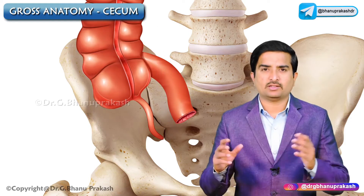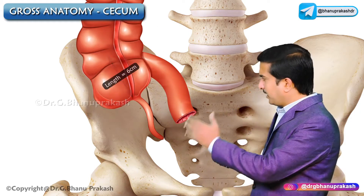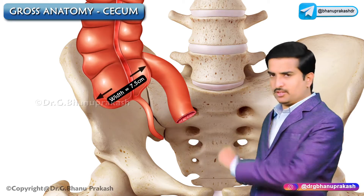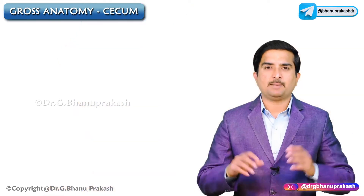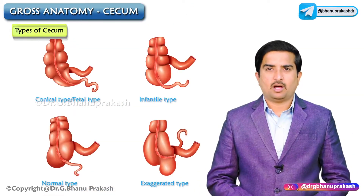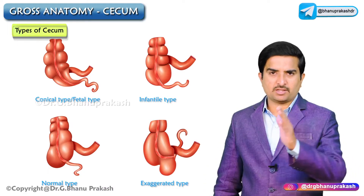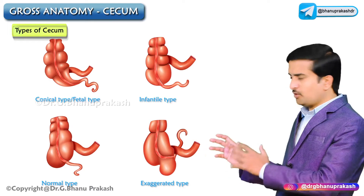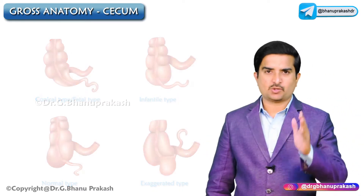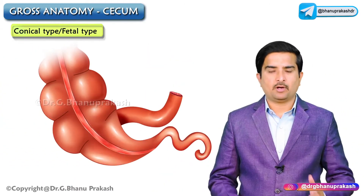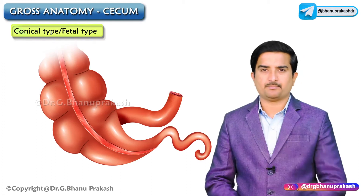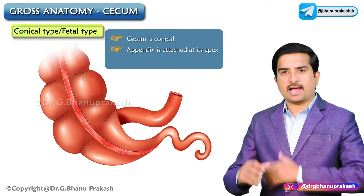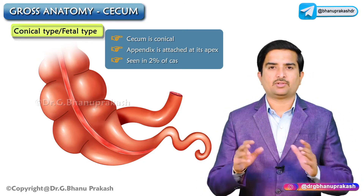The dimensions of the cecum are: length 6 centimeters and width 7.5 centimeters. According to the basis of growth, there are four types of cecum. The first is the conical type, also called the fetal type, where the cecum is conical and the appendix is attached at its apex.